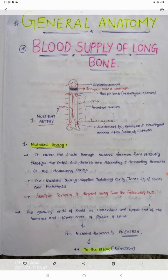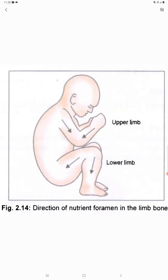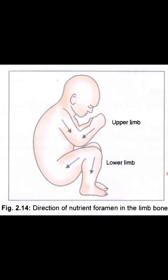The growing ends in the upper limb are the upper end of the humerus and the lower ends of the radius and ulna. So the nutrient foramen will be opposite to these — away from the growing ends — meaning the direction will be towards the elbow. In the diagram for the upper limb, both arrow marks are shown pointing towards the elbow.